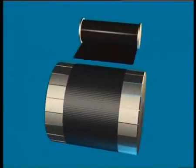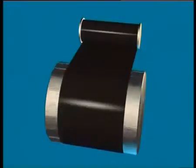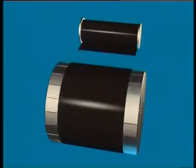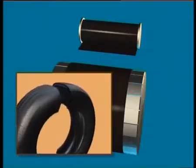The first element applied to the drum is a sheet of airtight synthetic rubber. This layer replaces the inner tube in today's tyres.